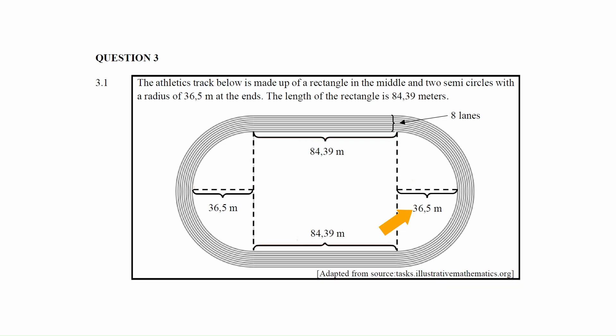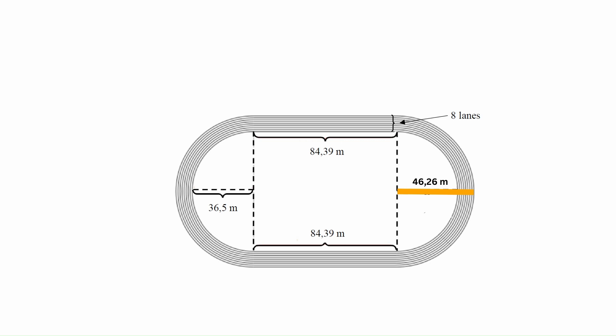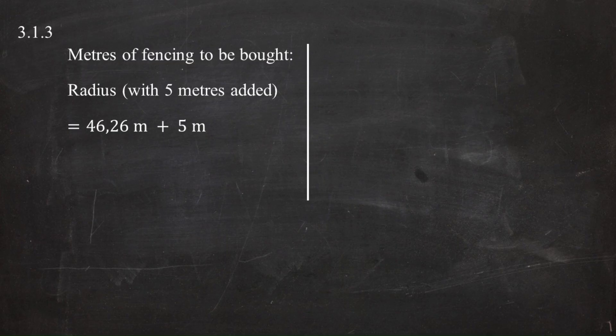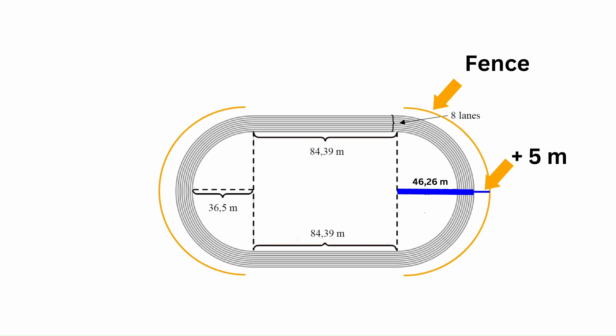The inner radius of the track is 36.5 meters, and the outer radius of the outer lane is 46.26 meters. Since the fence is 5 meters from the outer lane, the fence radius equals 46.26 + 5 = 51.26 meters. With this radius, we can calculate the circumference of the two semicircles combined.